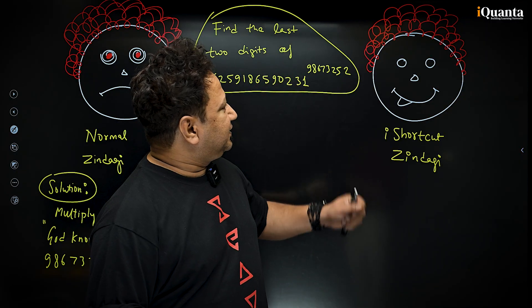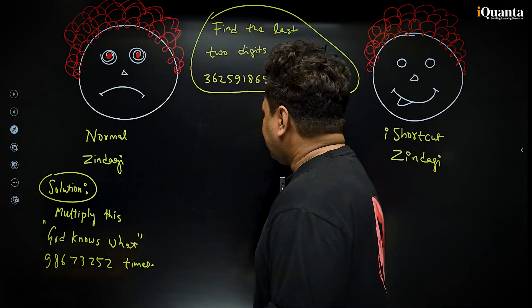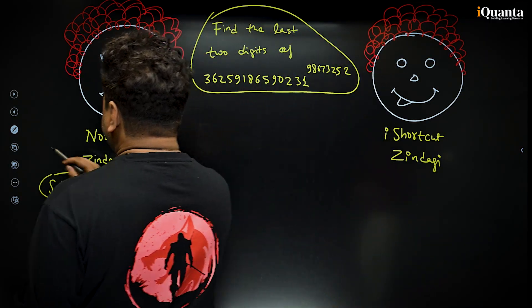Now, coming to iShortcut Zindagi. So what I'll do here, see, I'll just look at the last two digits, nothing else.